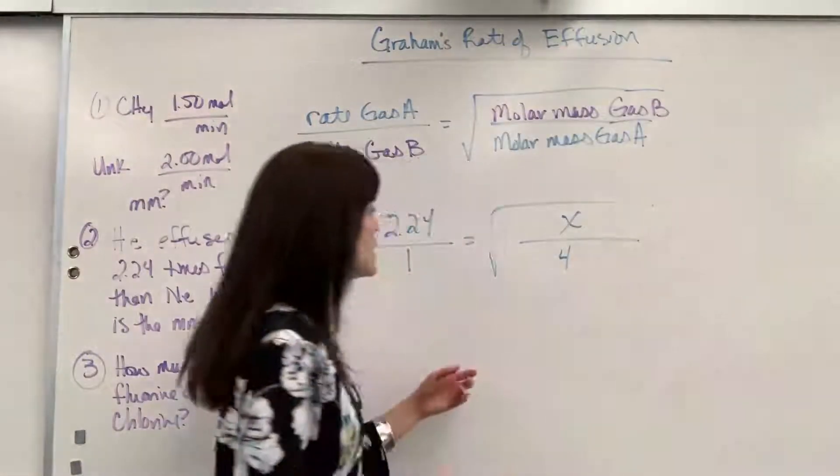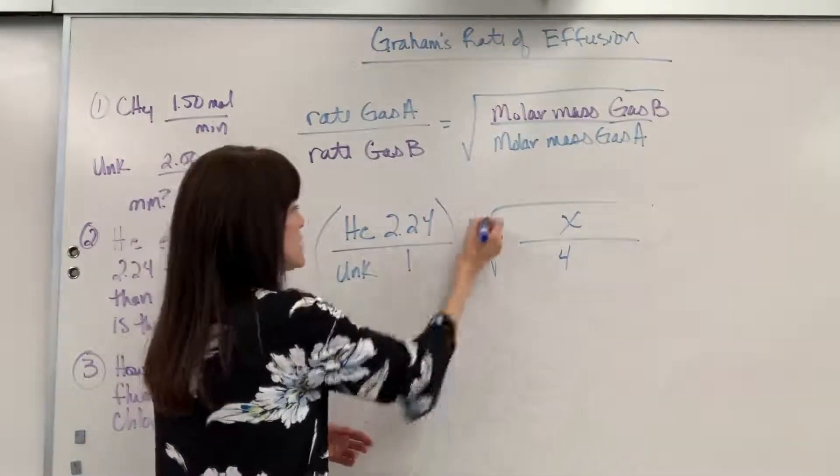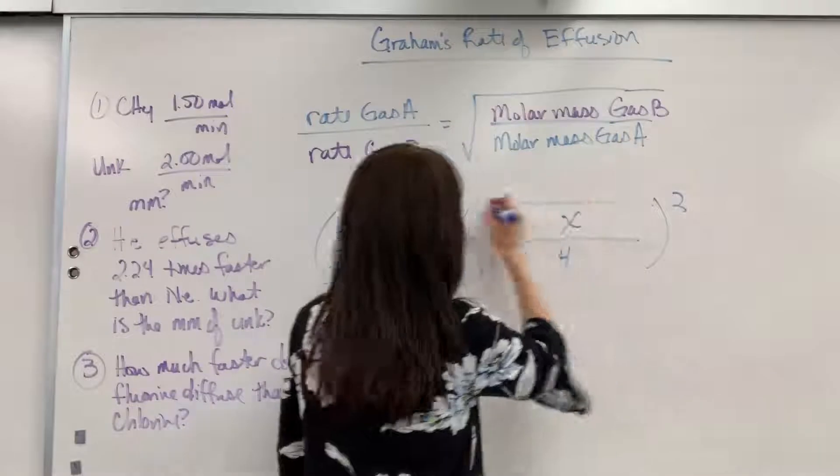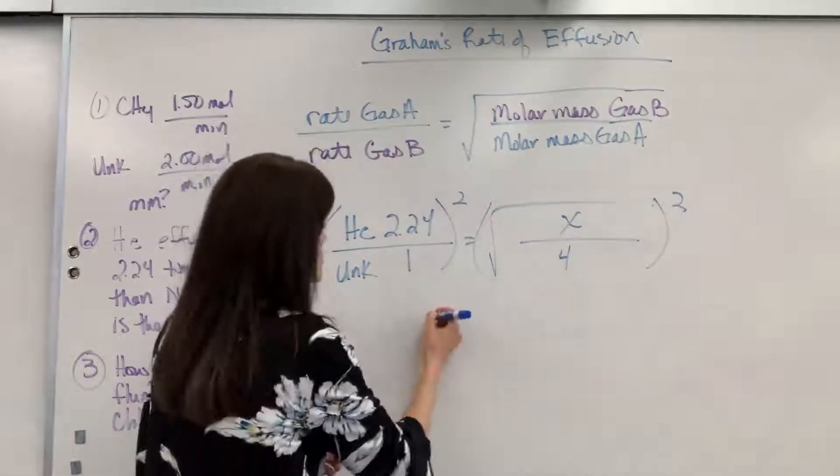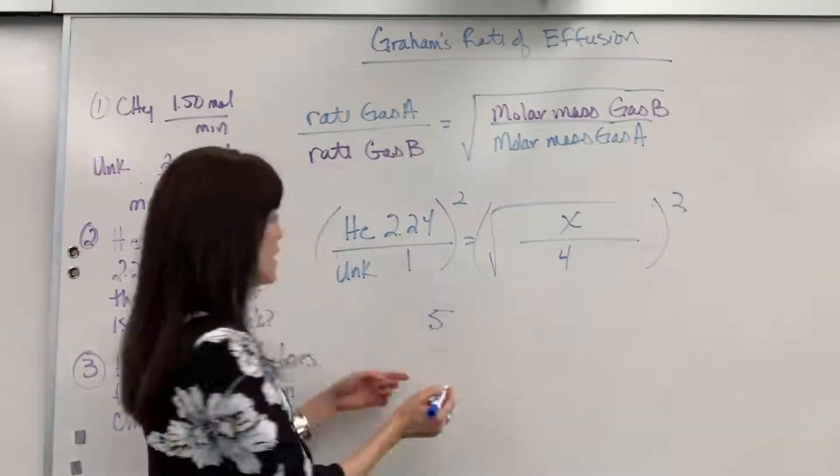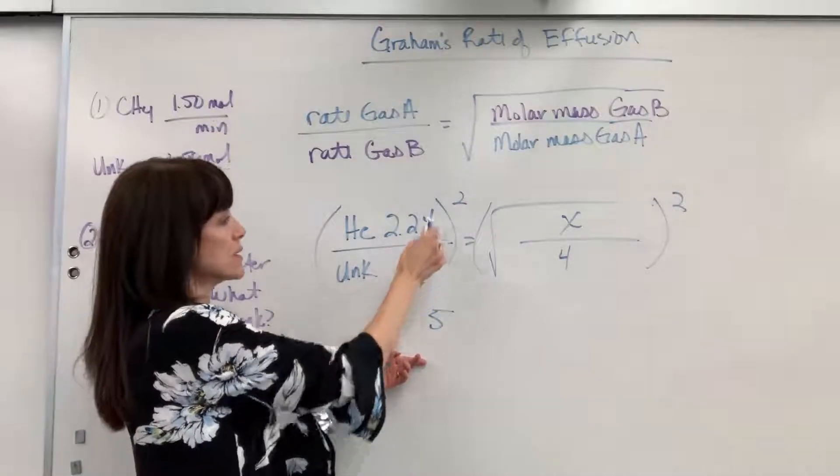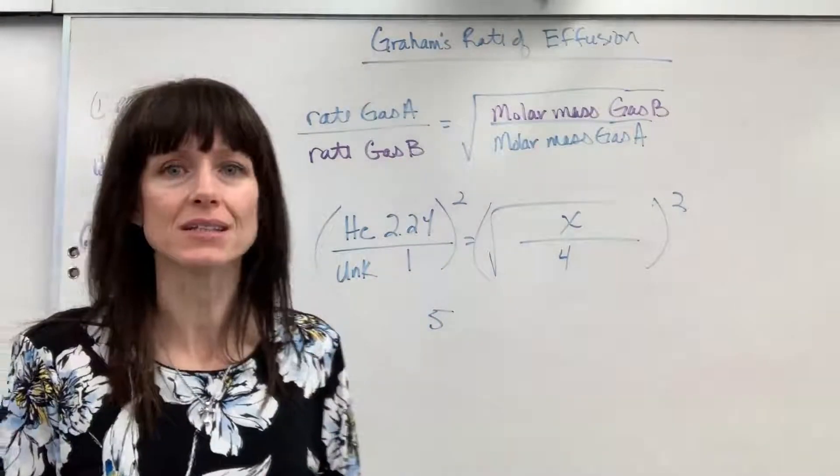So, let's go ahead and square both sides so that we can get rid of that square root. Now, see, 2.24 squared is going to be 5. And units on this, it would just be any rate, so they cancel. Don't have to worry about that.